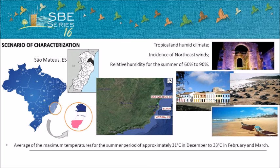The study was conducted in the city of São Matias, which has a tropical and humid climate with an average of the maximum temperatures for the summer period of approximately 31 degrees Celsius in December to 33 degrees Celsius in February and March, with incidence of northeast winds and relative humidity for the summer of 60 to 90 percent.